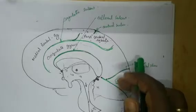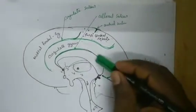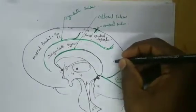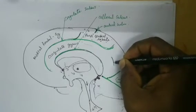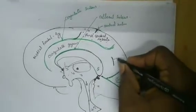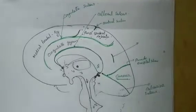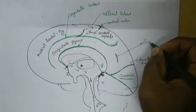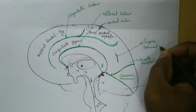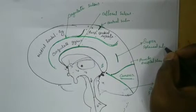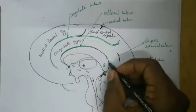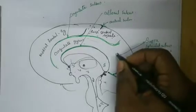In front of the cuneus, this parietal lobe is divided by a sulcus which is running just parallel to the splenium of the corpus callosum, and this sulcus is called the suprasplenial sulcus — since it is present above the splenium.